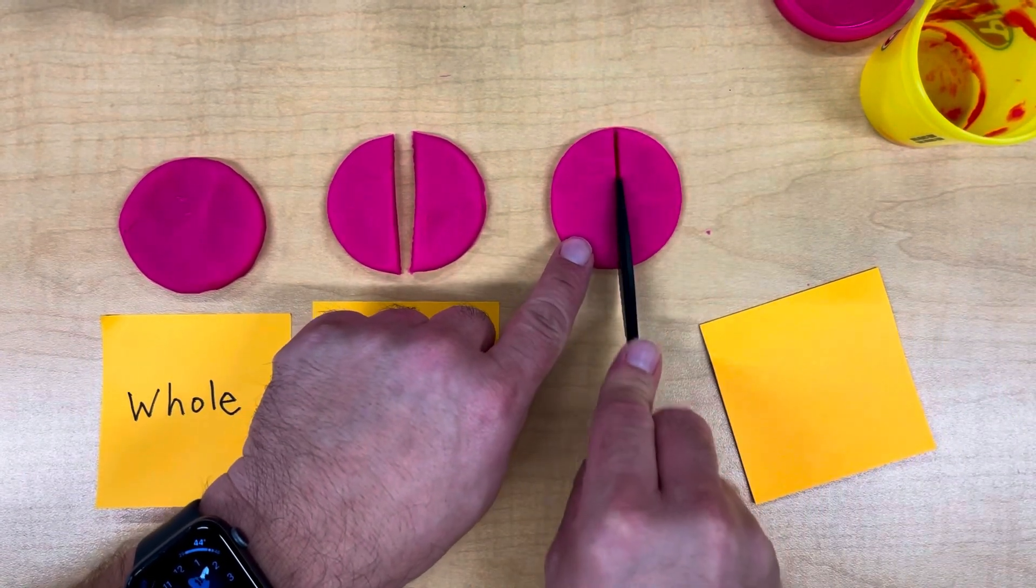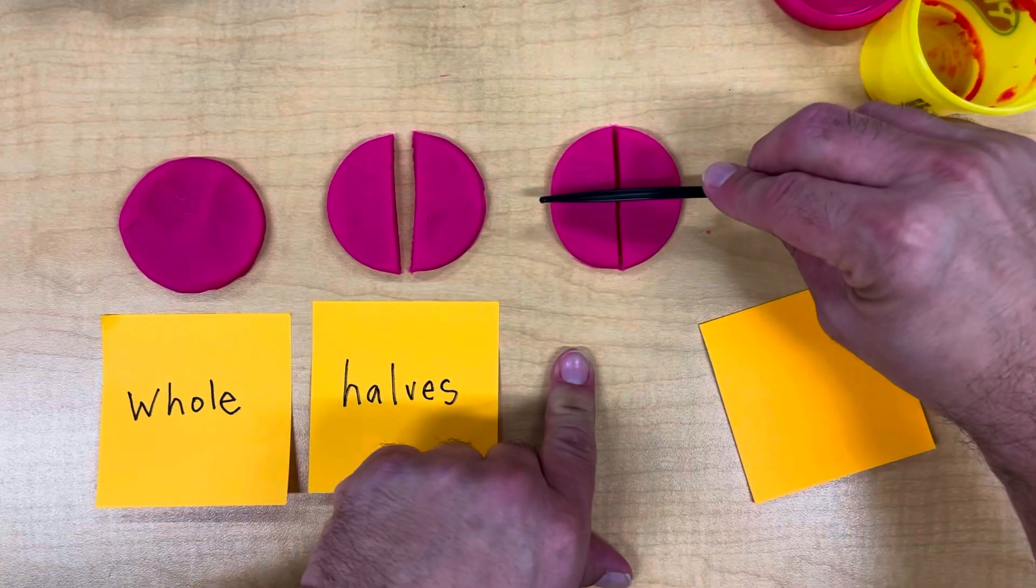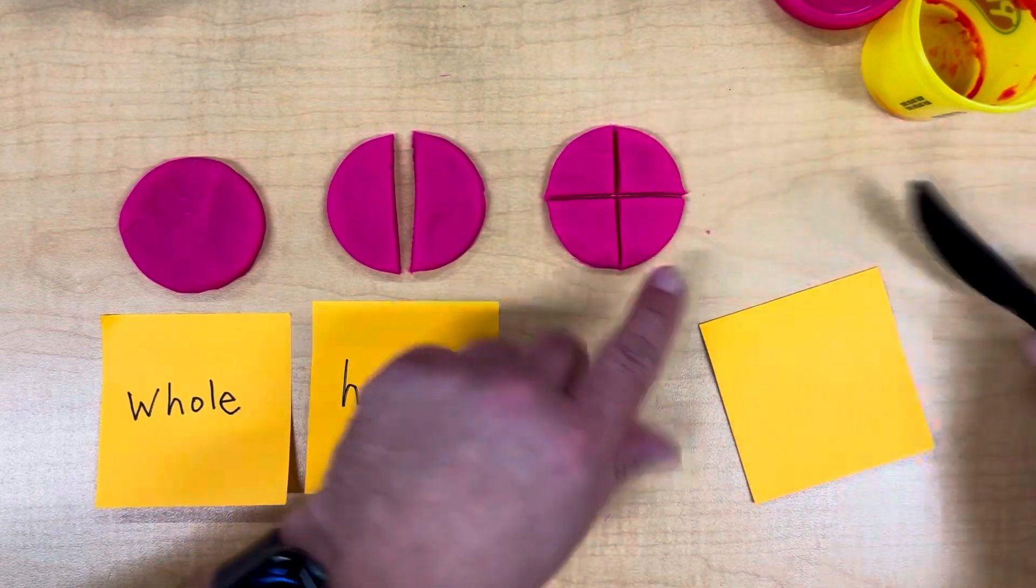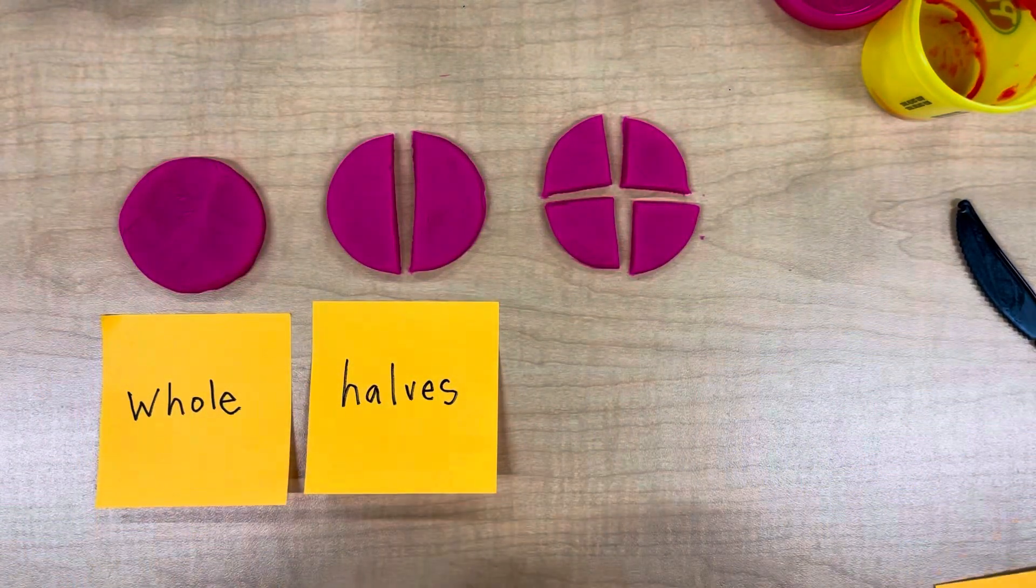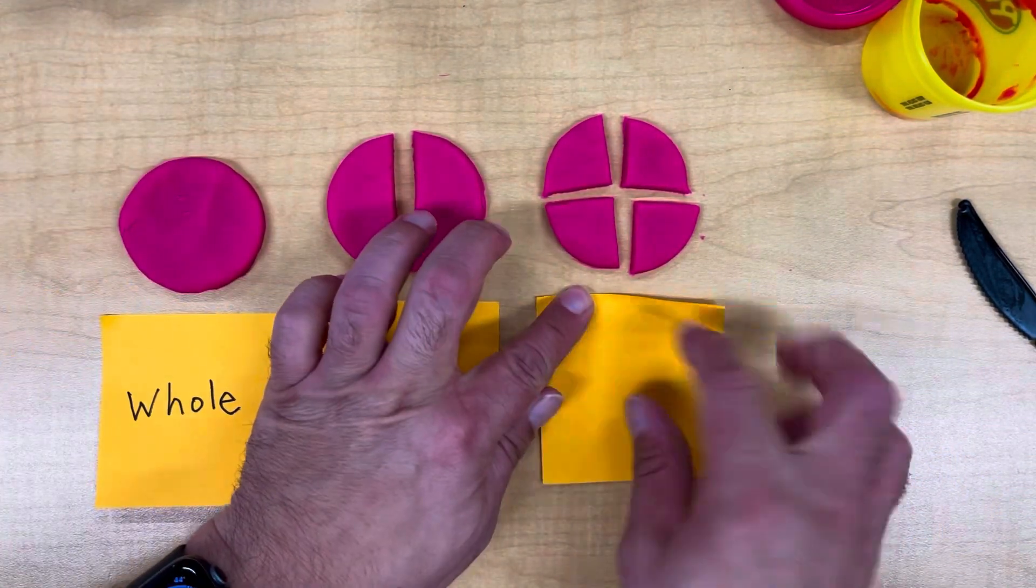Next, we're going to cut the last one into two, and then again across. This makes four pieces, or quarters. Let's label this one quarters.